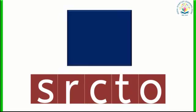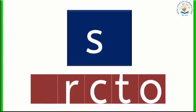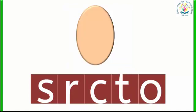Which shape is this? Square. And what is the first letter of square? S. Very good! Which shape is this? Oval. And oval starts with the letter O.